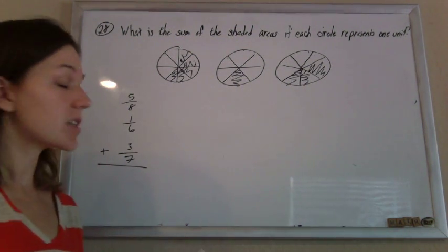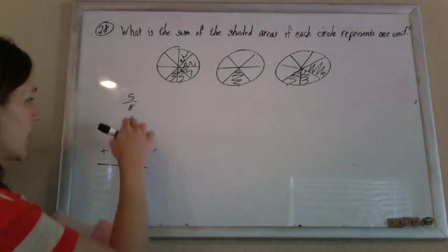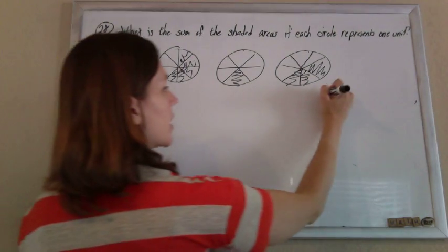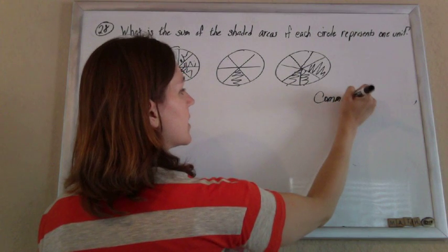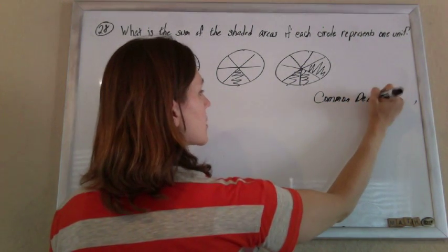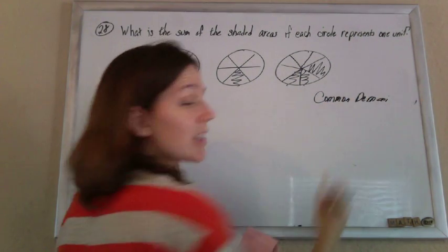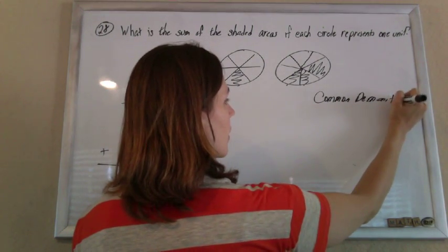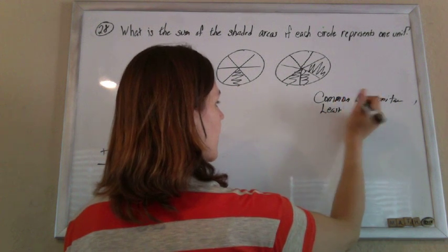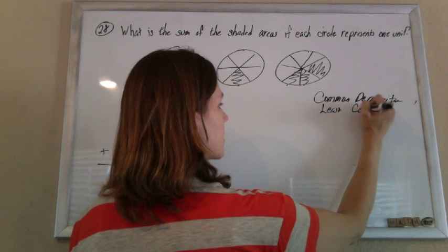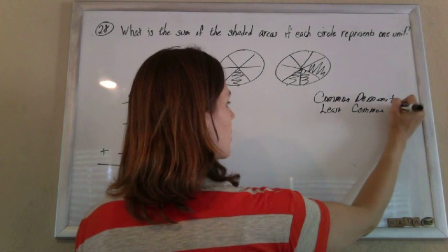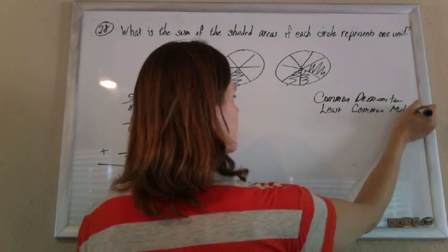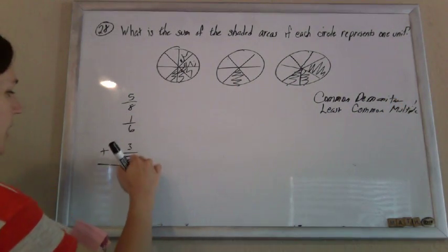Now in order to add fractions you need a common denominator, and the common denominator is going to be your least common multiple. I say least, but you can choose a bigger one first if you want, that's fine too, you'll just have to simplify it later. Lots of ways to find your least common multiple between 8 and 6 and 7.